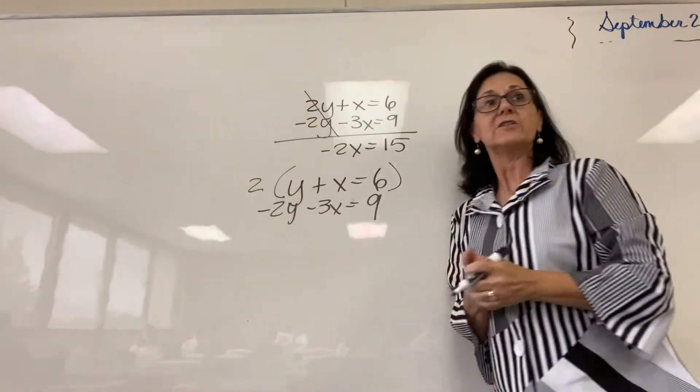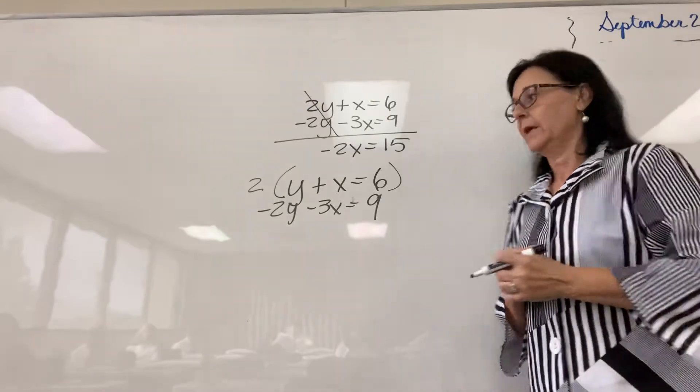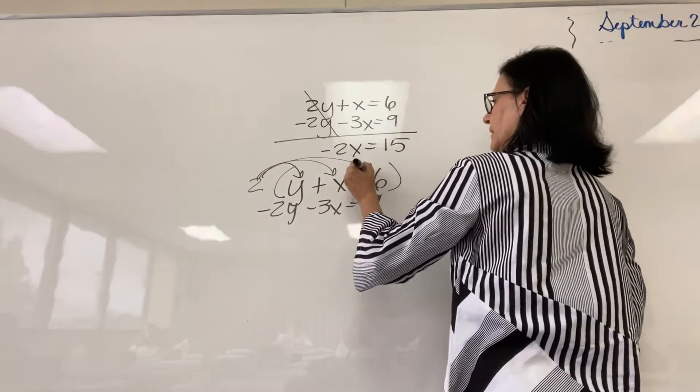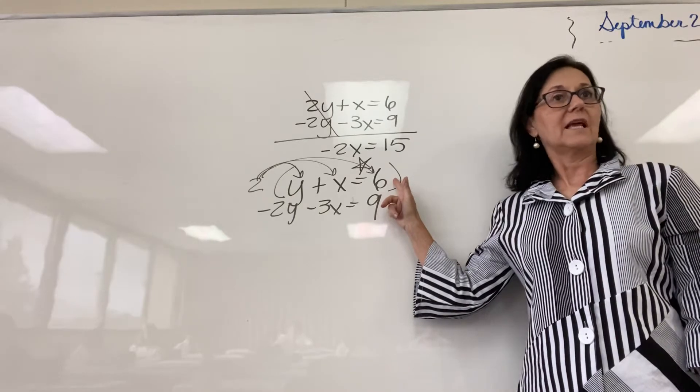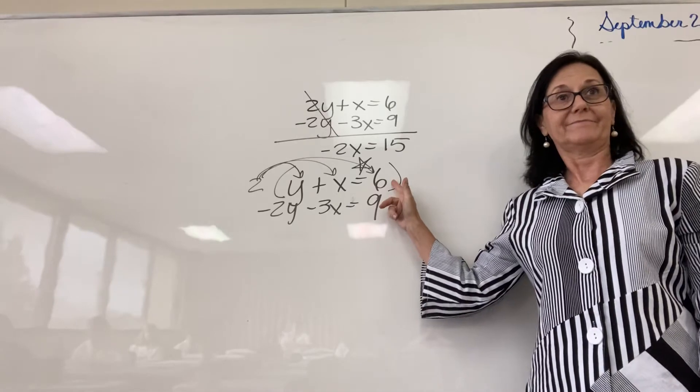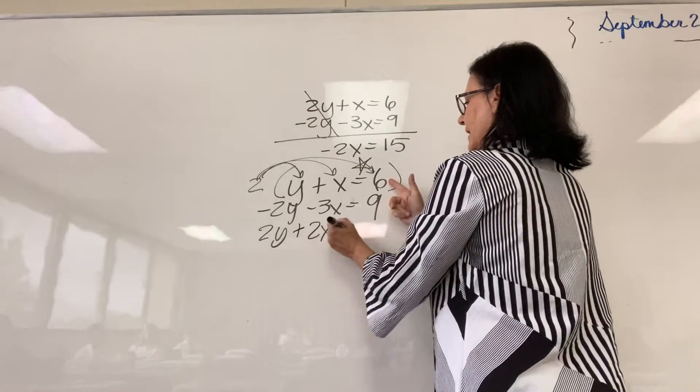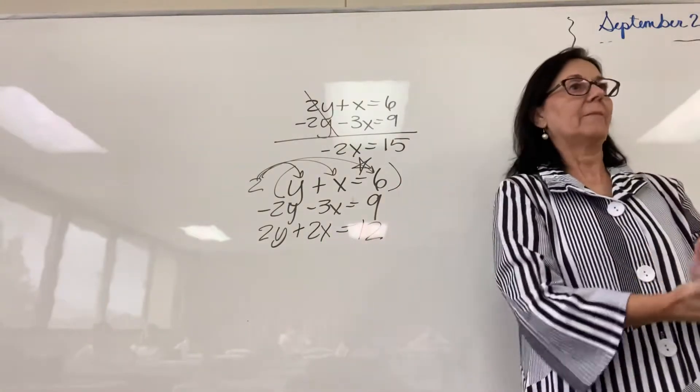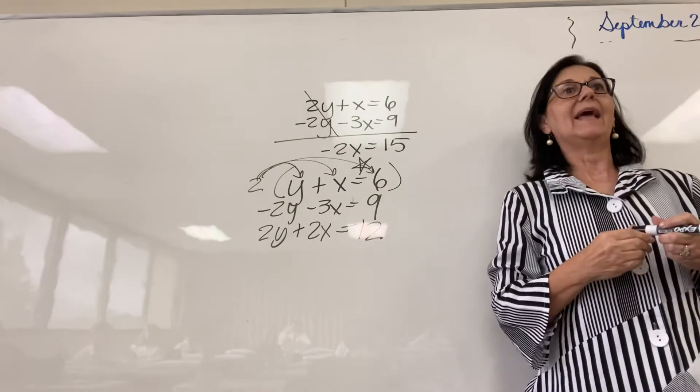If I take this first equation, I need everybody to pay extremely close attention right here. I must multiply every term by two. This right here is where most students make mistakes. They don't multiply the constant on the other side of the equal sign. So you end up with 2y plus 2x equals 12. Don't forget, multiply every term. Make it happen.